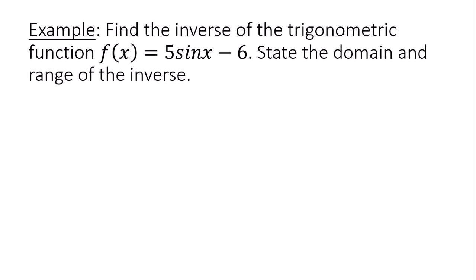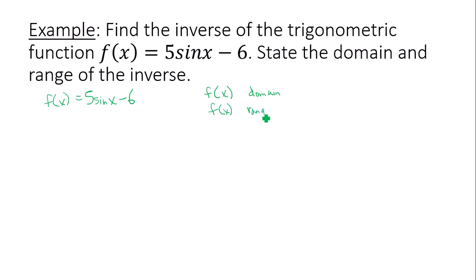Now let's find the inverse of the trig function f(x) = 5sin(x) - 6, and state the domain and range of the inverse. First, I need to find the domain and range of the original function. Since I'm finding an inverse, it's important to restrict to a 1-to-1 domain, so my domain must be negative π/2 to π/2.